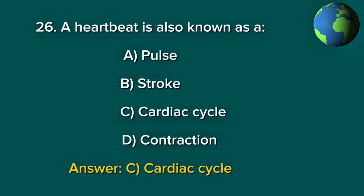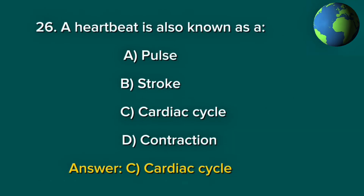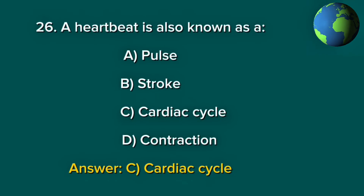Question 26. A heartbeat is also known as: A. Pulse. B. Stroke. C. Cardiac cycle. D. Contraction. Answer: C. Cardiac cycle.